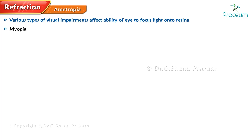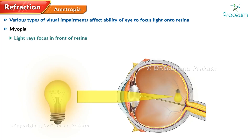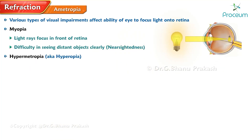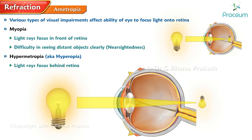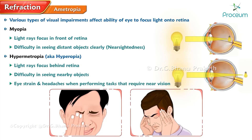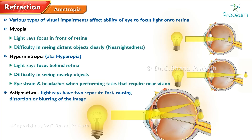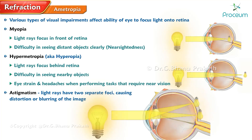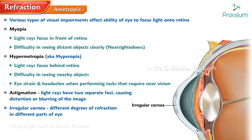One such type is myopia, where the rays of light tend to focus in front of the retina, leading to difficulty in seeing distant objects clearly. This condition is commonly known as nearsightedness. Hypermetropia, also known as hyperopia, is another type where the rays of light focus behind the retina, resulting in difficulty seeing nearby objects clearly. Astigmatism is a type of ametropia where the rays of light have two separate foci, causing distortion or blurring of the image, occurring when the cornea is irregularly shaped.